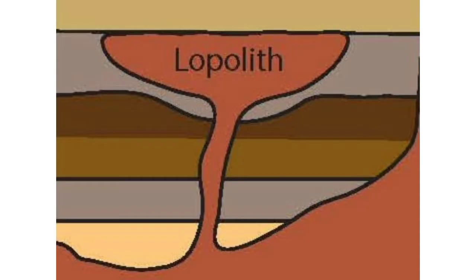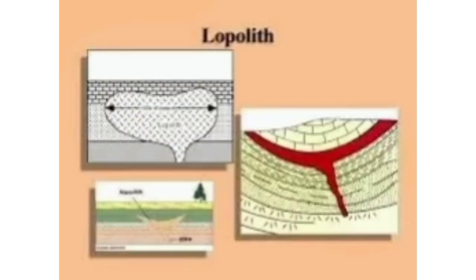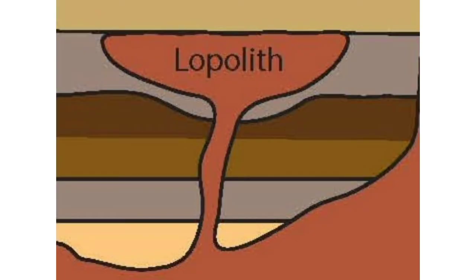Then comes the lopolith. Lopolith is also fed by a pipe-like conduit and made of lava. It is a saucer-shaped structure — in Bengali it is called 'korai' — so lopolith has a saucer-shaped structure.